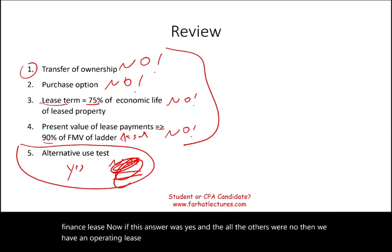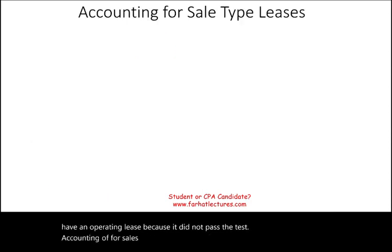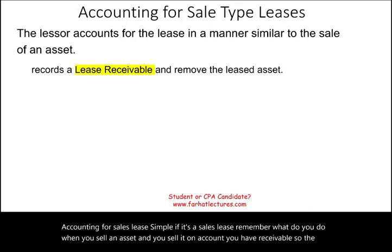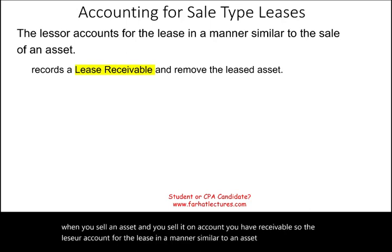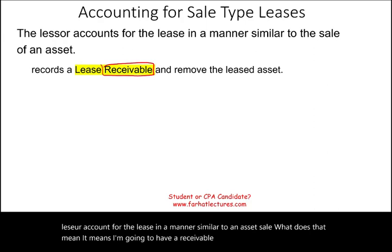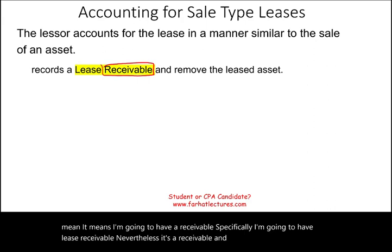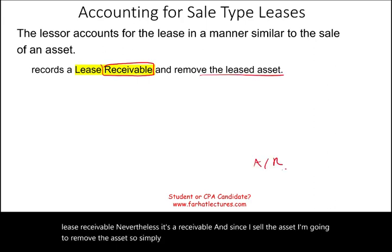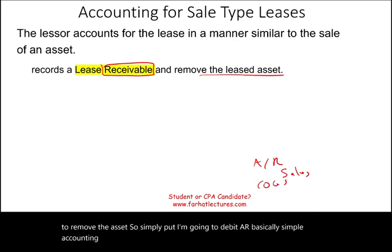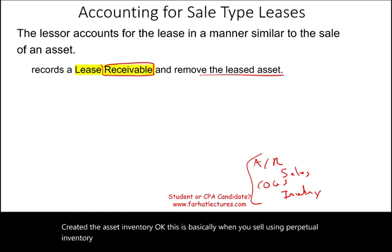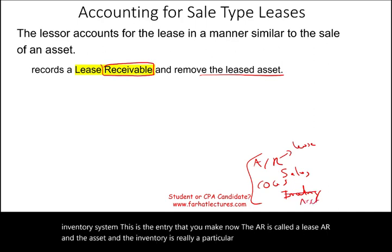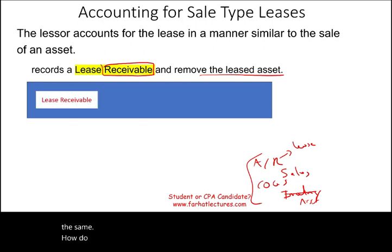Accounting for a sales-type lease is straightforward: it's similar to selling an asset on account. The lessor records a lease receivable and removes the asset from the books. The journal entry is: debit lease receivable (the AR), credit sales, debit cost of goods sold, and credit the asset (inventory). This is the standard perpetual inventory system approach applied to the lease context.